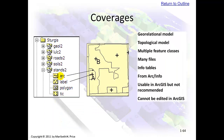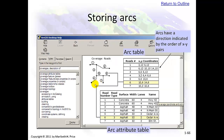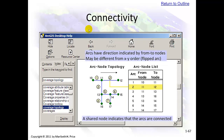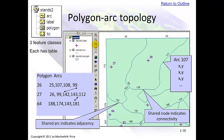Coverages had multiple parts: there was an arc (which was a line), a label (which is annotation), a polygon, and a tick. We're not going to go over covered storage, storing arcs, or connectivity in detail, as we don't use coverages in this course.